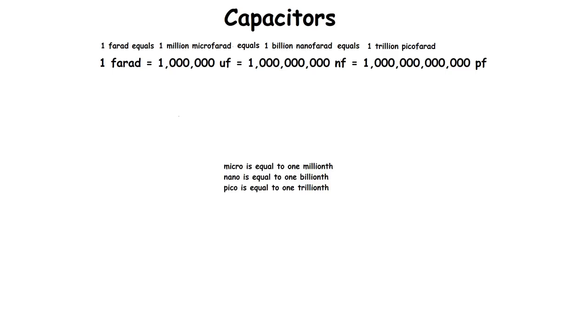If we look at what's on the screen now, micro is equal to one millionth, whatever you're talking about, whether it be farads or anything. Nano is equal to one billionth, and pico is equal to one trillionth. You can see how that relates to your chart above, where one farad equals one million microfarads.